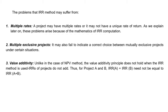Now let's discuss the problems of the IRR method. The first problem is multiple rates. Since we use trial and error to calculate the rate of return, we have to perform many calculations. First we tried 20%, then 16%, then 15%. There is a lot of computation involved in this method to arrive at the ideal IRR value.